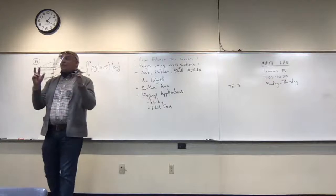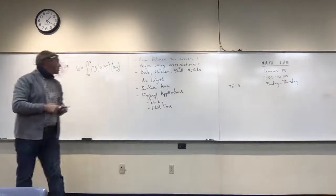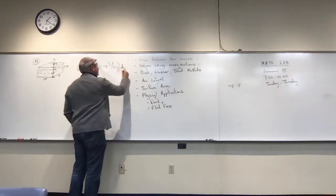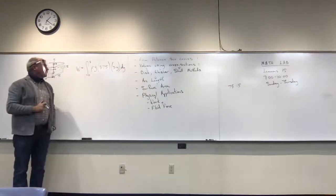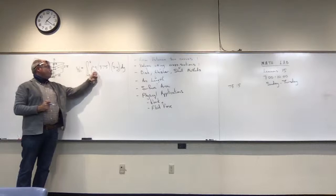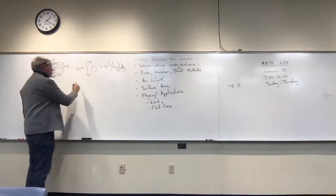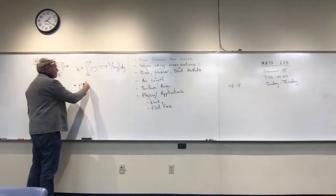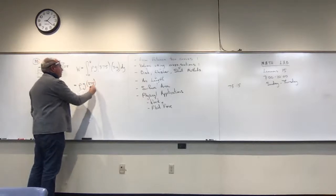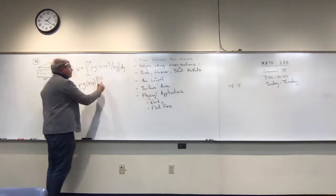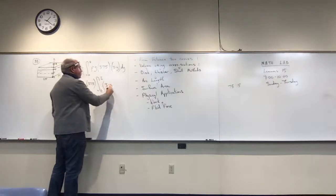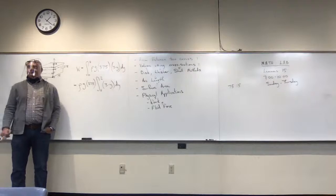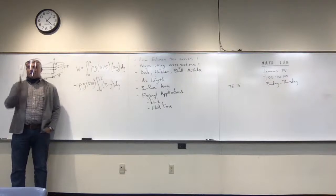Putting it all together: W = ρg · 375 · ∫₀² (3 − y) dy. The constants ρ, g, and 375 can be pulled out, leaving a straightforward integral — and that's very easy to evaluate.